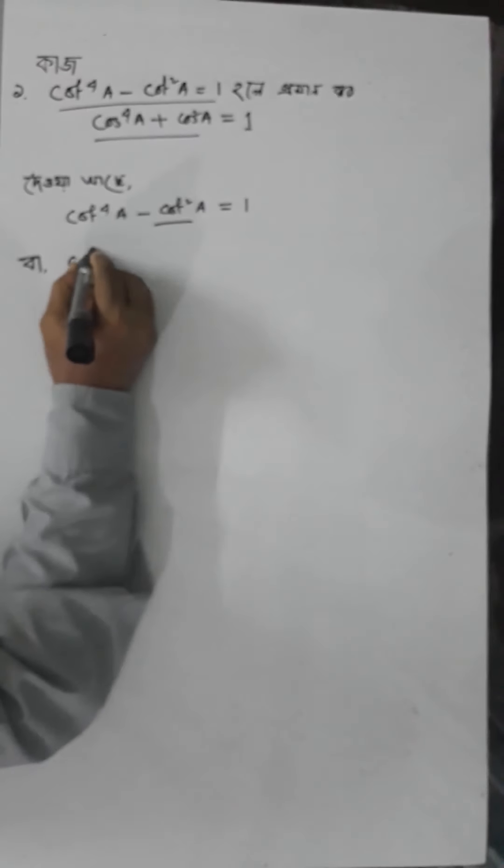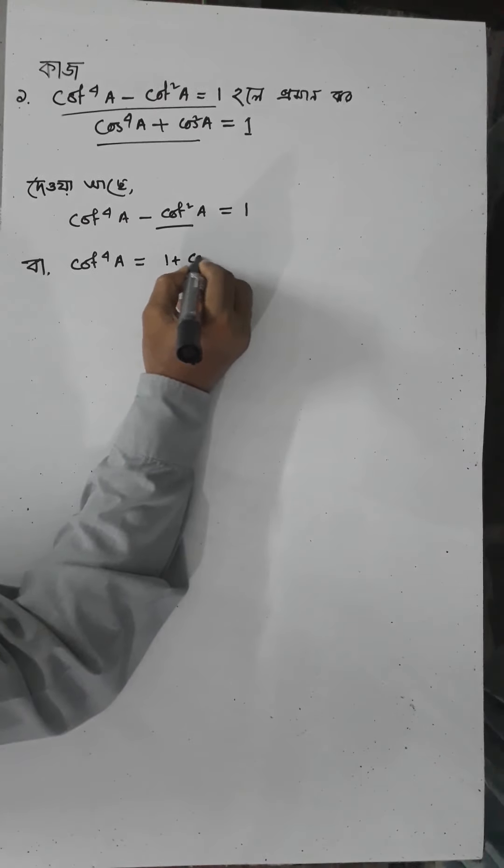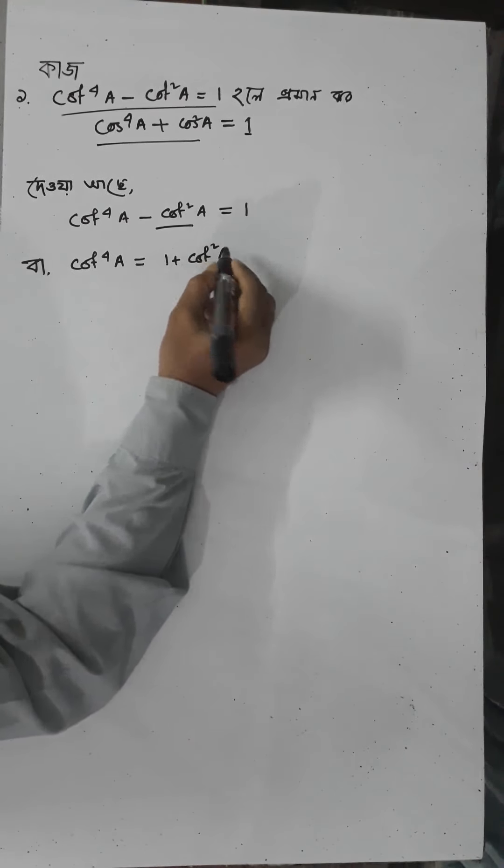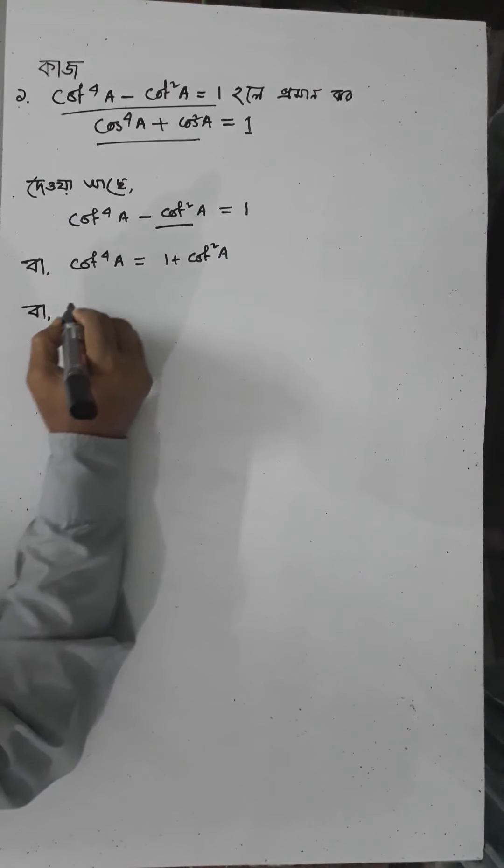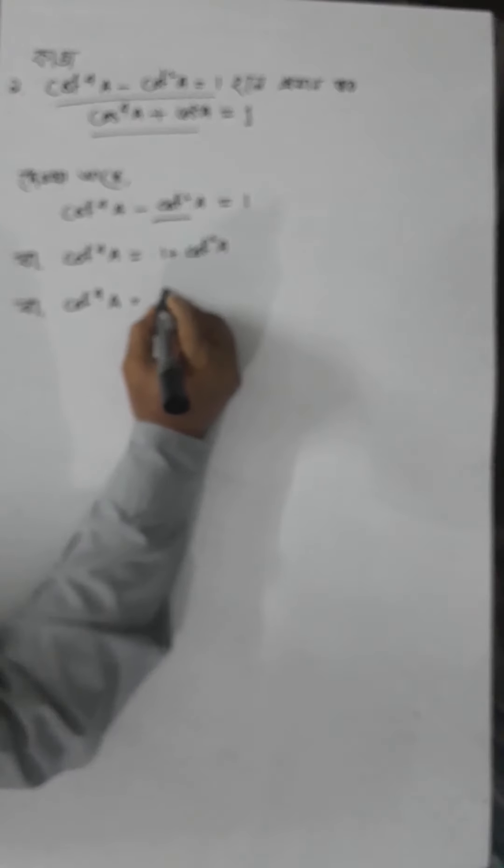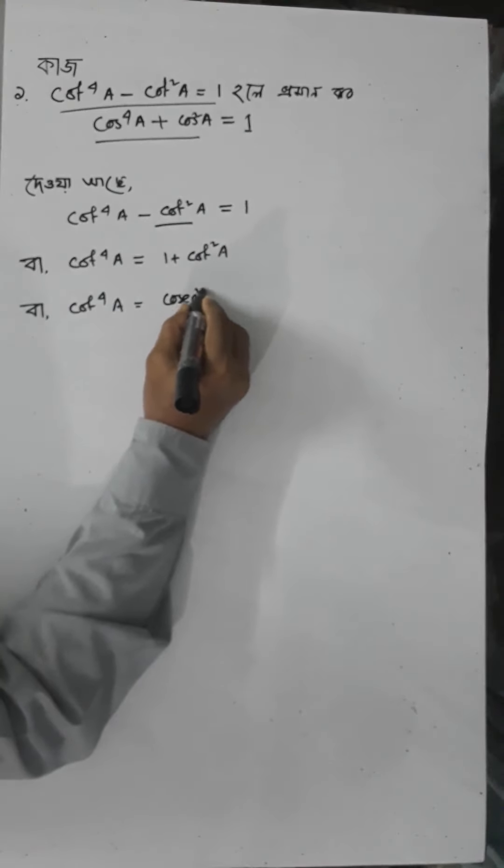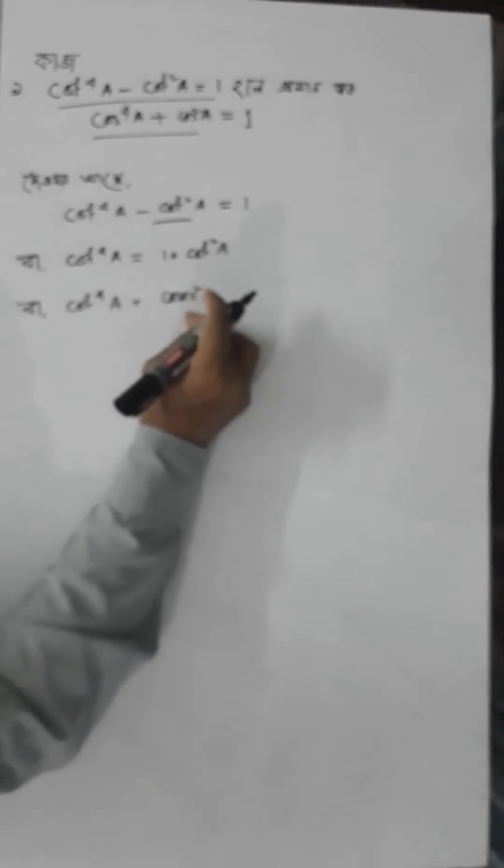cos⁴a equals 1 plus cot²a. cos⁴a equals cot²a. Because 1 plus cot²a equals cot²a.